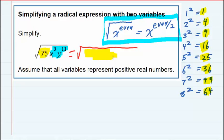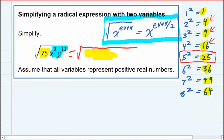So 75 is not 4 times another number or 9 times another number. I can't write 75 as 16 times another number. But 25, I can rewrite the 75 as 25 times 3.